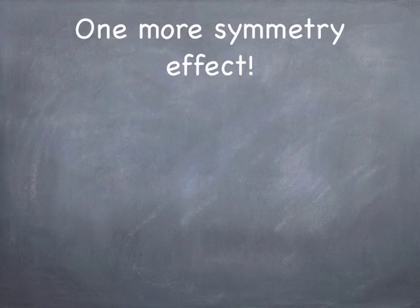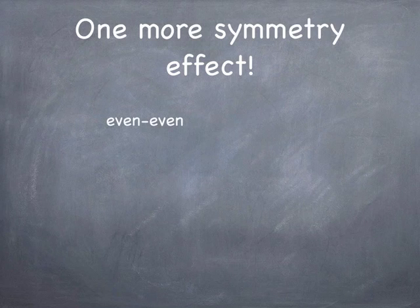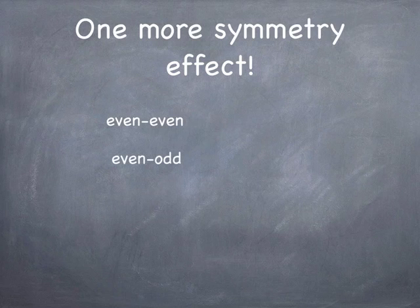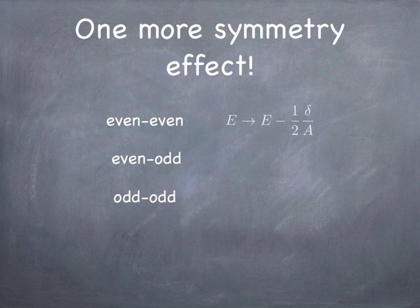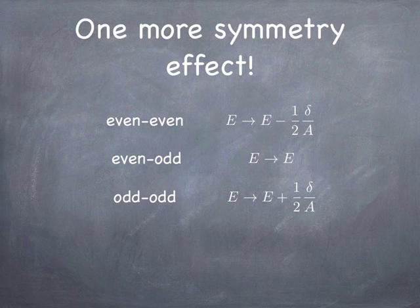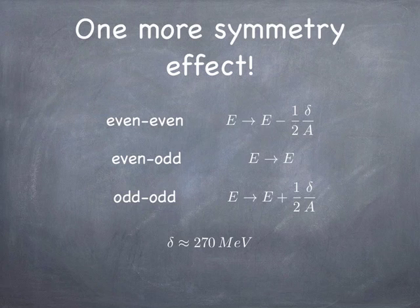There's one more symmetry effect: the evenness and oddness of proton and neutron numbers. The lowest energy is when both Z and N are even — everyone is paired up. Even-Z with odd-N (or vice versa) is even-odd and has slightly higher energy. The worst case is odd-odd — nobody is paired and the energy is highest. You can add a term δ to the semi-empirical mass formula: subtract δ for even-even, leave it unchanged for even-odd, and add δ for odd-odd. Based on one popular fitting, δ ≈ 270 MeV.